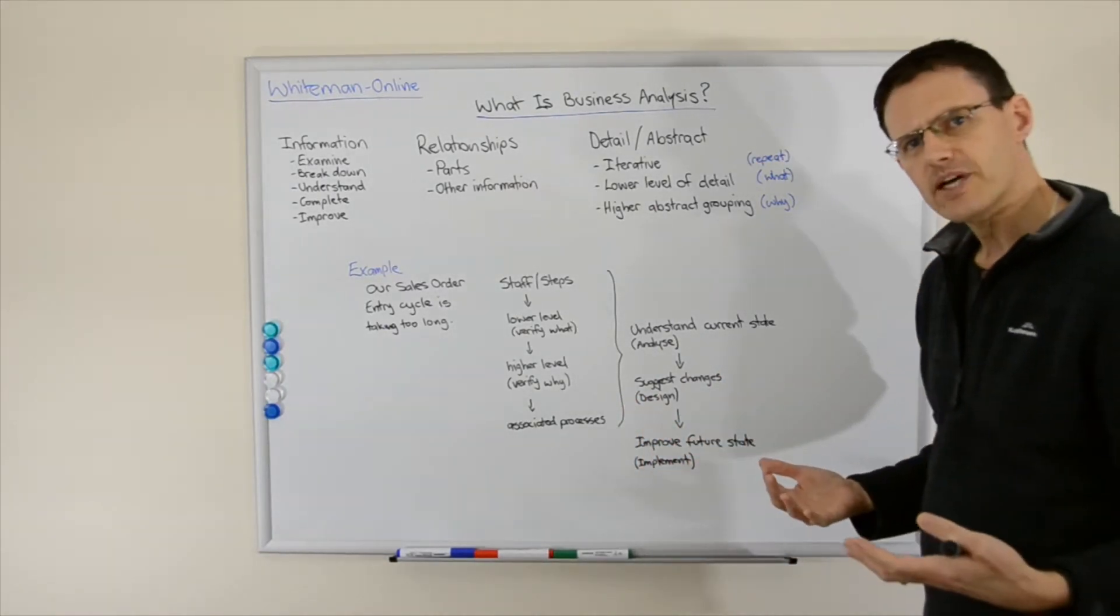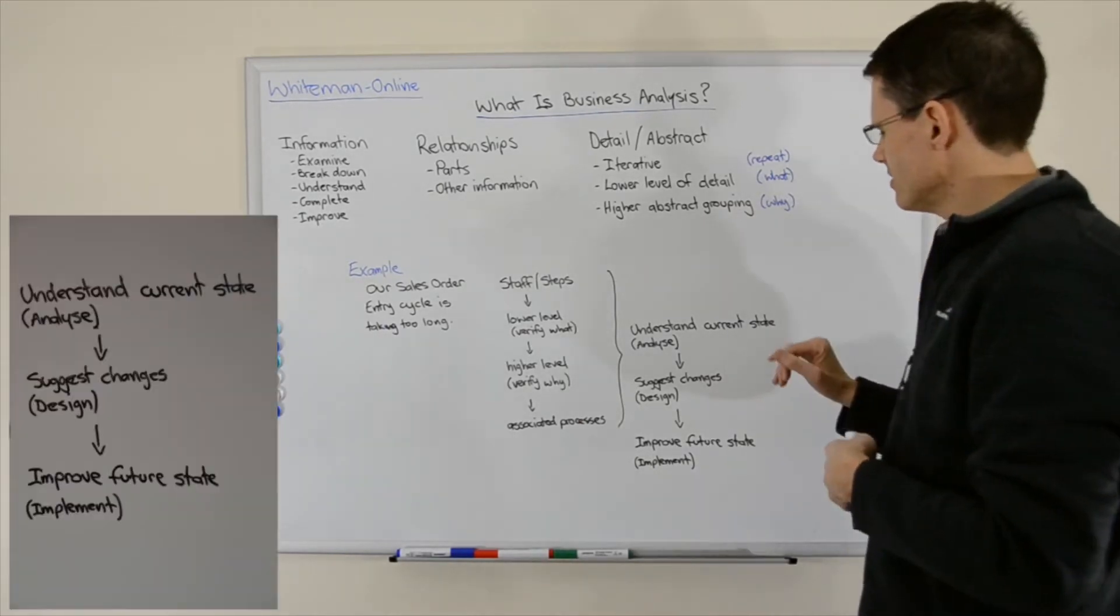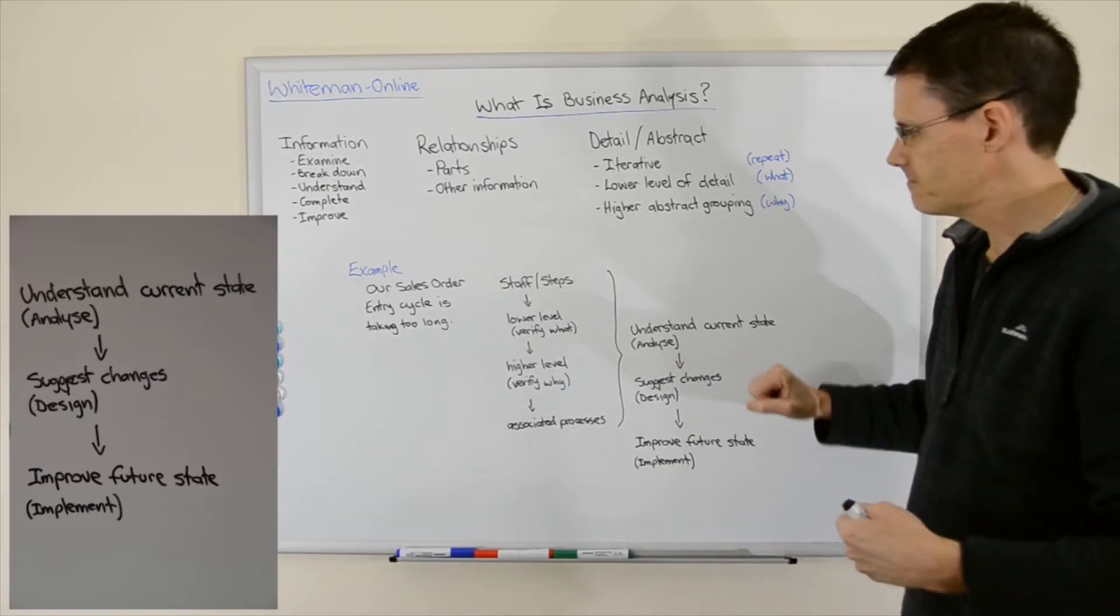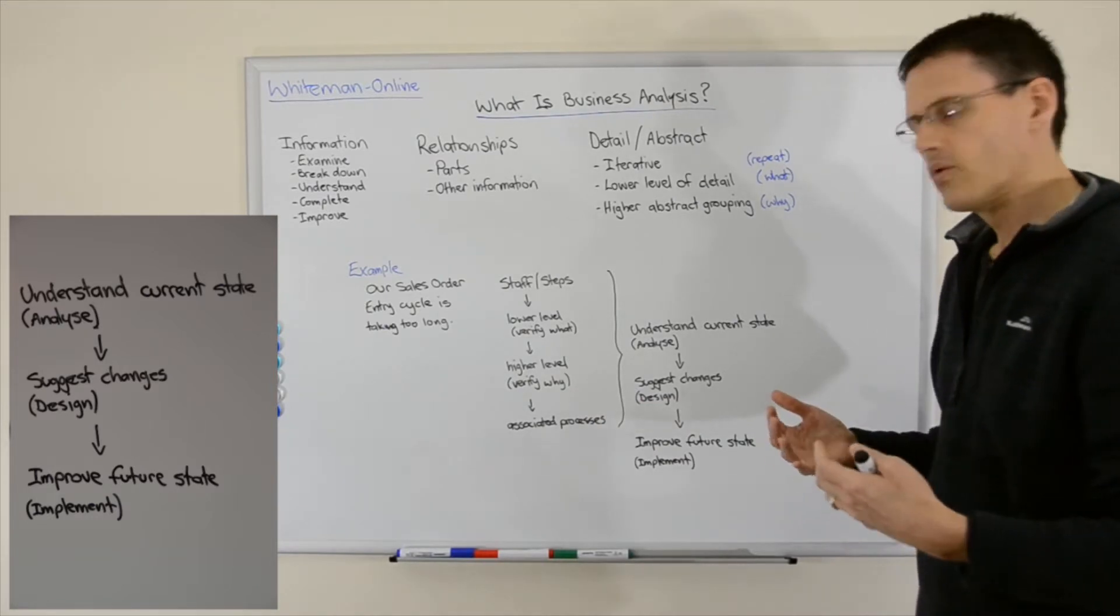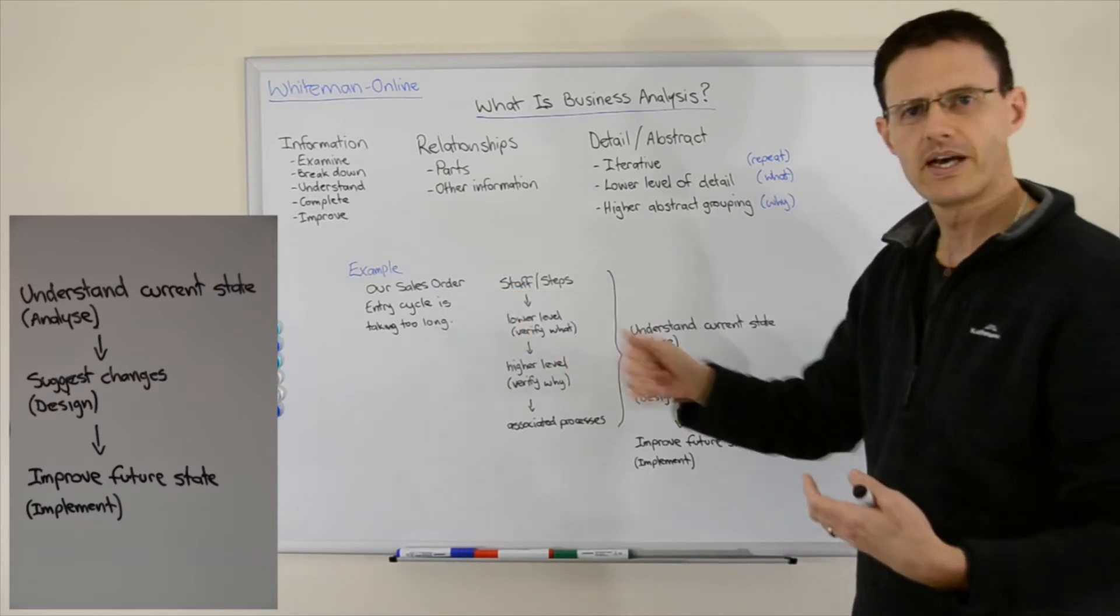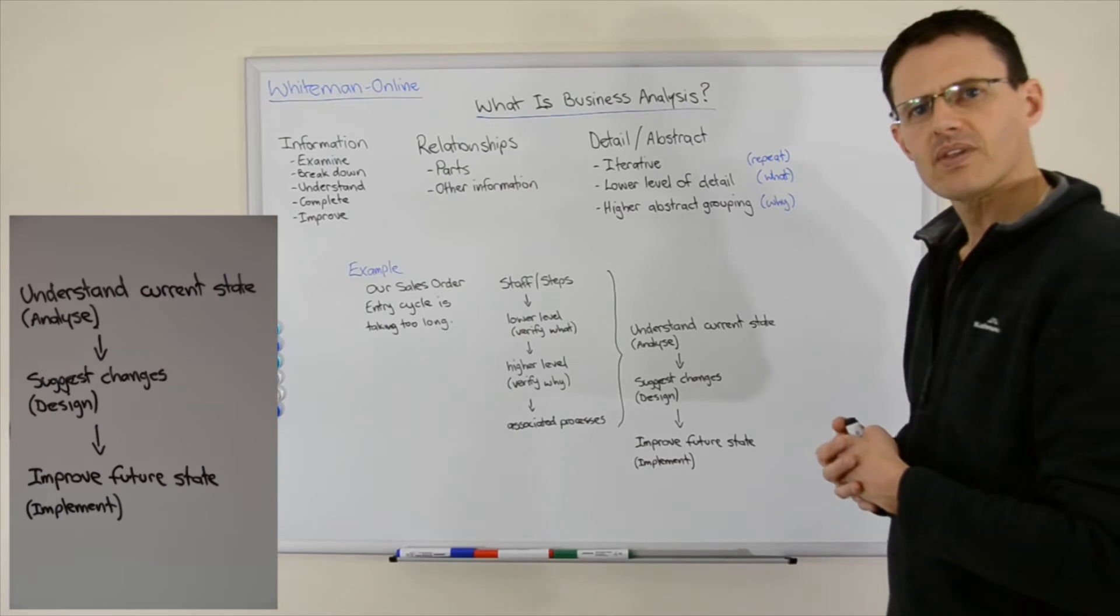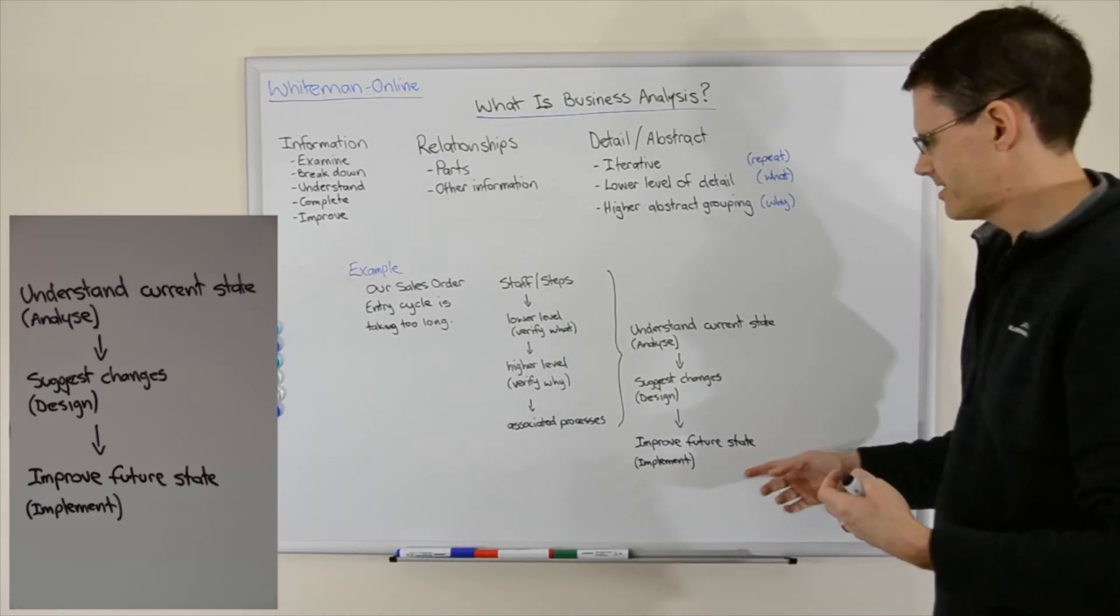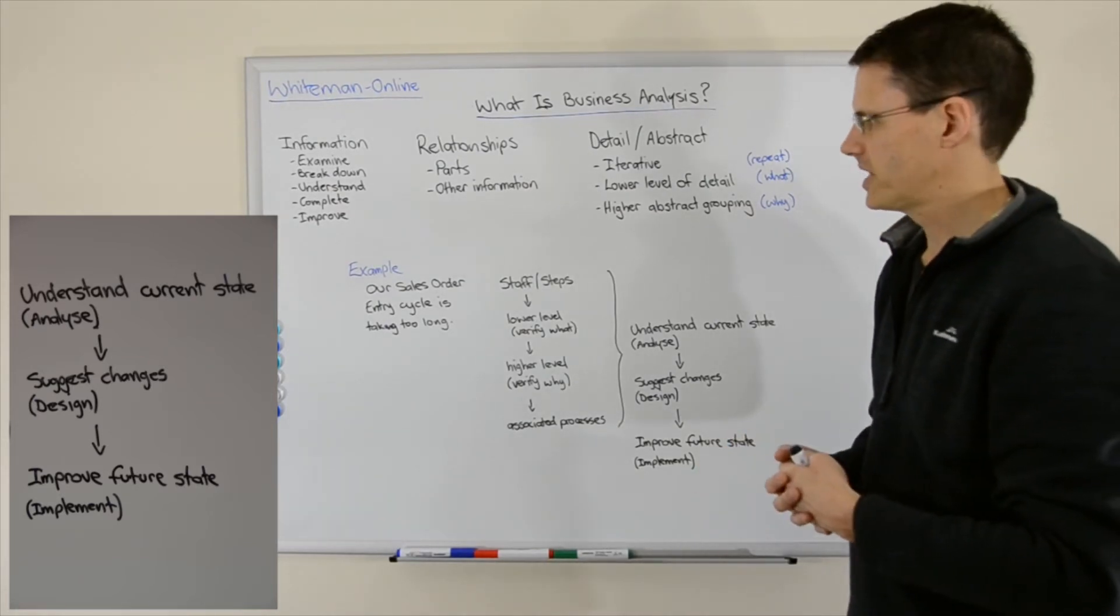Once we have that information, it's only useful if we do something with it. So with that, we understand the current state after going through these steps. With that information, we can then suggest changes to improve the sales order cycle. And then once approvals are gained, we can improve the future state and implement the changes to improve our sales order cycle.